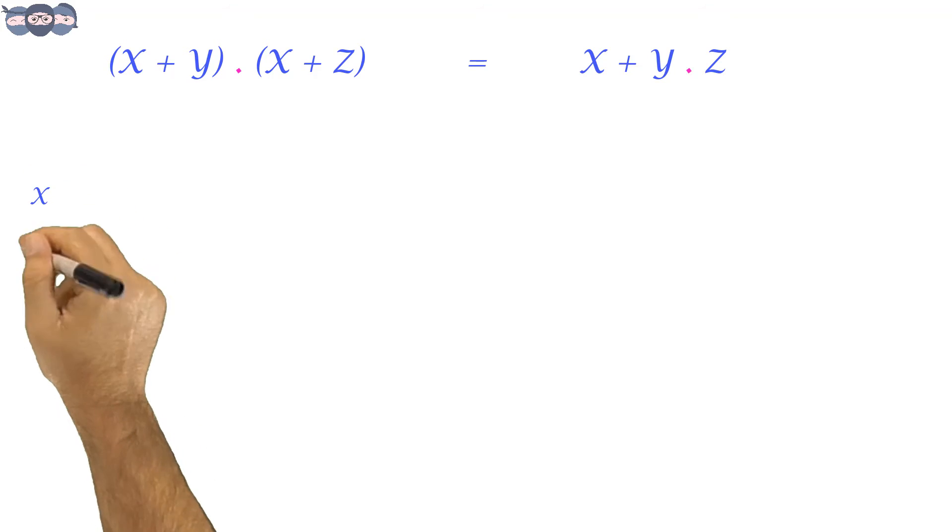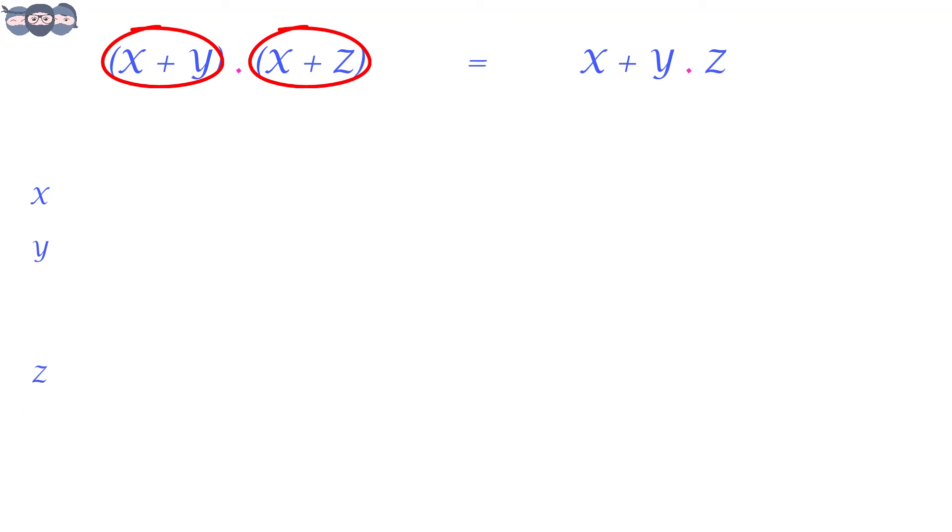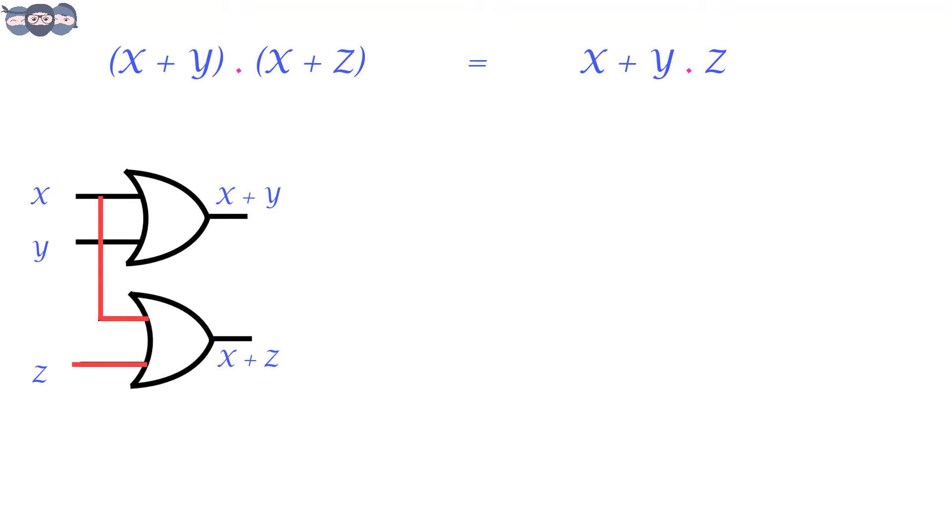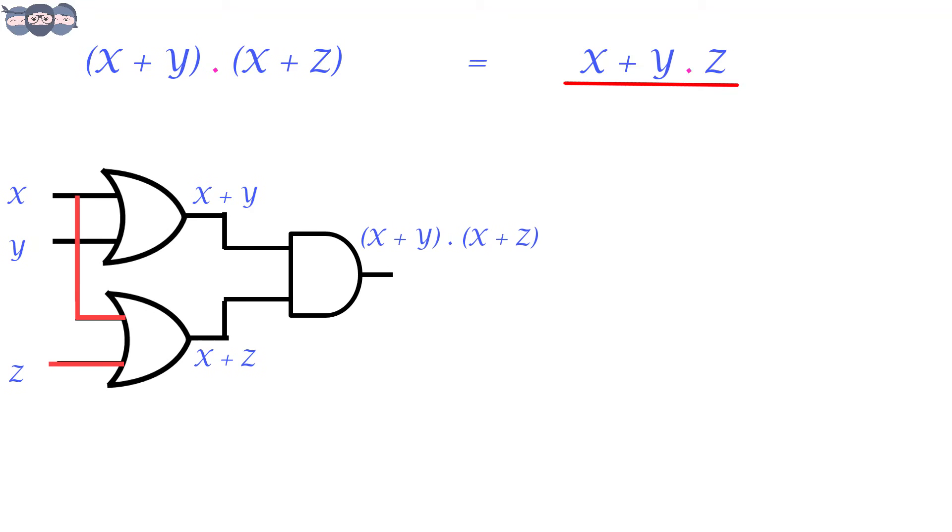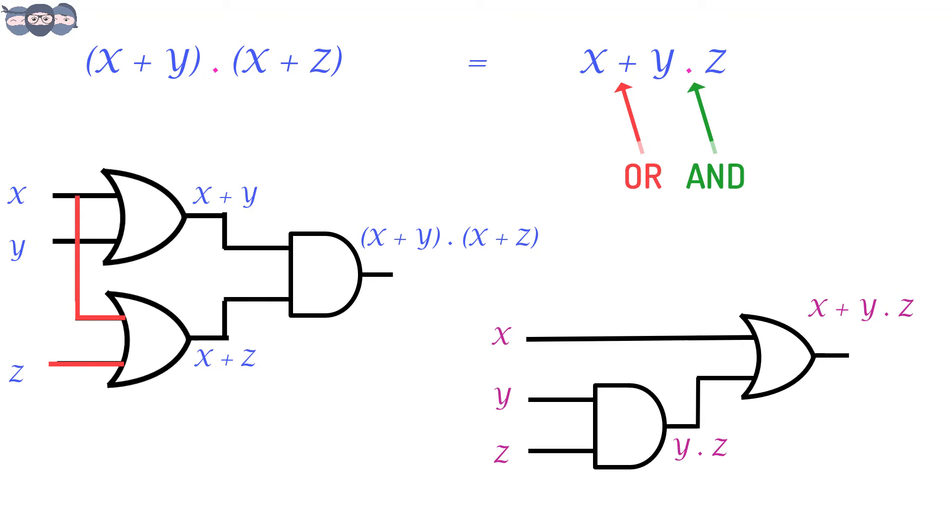We will represent the expression using logic gates to see the difference between the two. There are three inputs: X, Y and Z. We take two OR gates. The outputs of these two go as inputs to the AND gate. For the simplified expression, there is one AND gate followed by an OR gate. As we can see, the number of gates is reduced. Thus, the time taken to reach the output has also reduced.